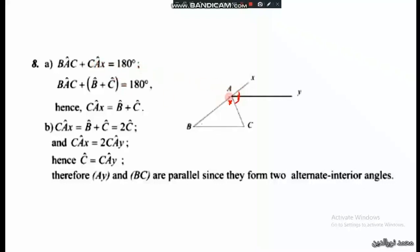Then we have angle BAC plus angle B plus angle C equals 180, because the sum of angles of any triangle is 180. Hence we can directly conclude that angle CAX equals B plus C.